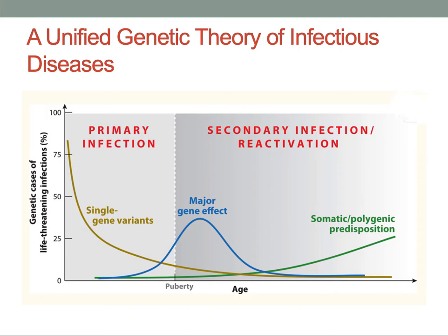The first three primary immunodeficiencies confirming predisposition to a single infectious agent to be described were epidermodysplasia verruciformis — a predisposition to oncogenic human papillomavirus infection — membrane attack complex complement defects predisposing to Neisseria, and X-linked lymphoproliferative disease predisposing to Epstein-Barr virus. From the 1970s onward, these studies paved the way for the discovery in the 1990s and beyond of mutations underlying various other infections, including mycobacterial disease, pneumococcal disease, chronic mucocutaneous disease, and herpes simplex encephalitis.